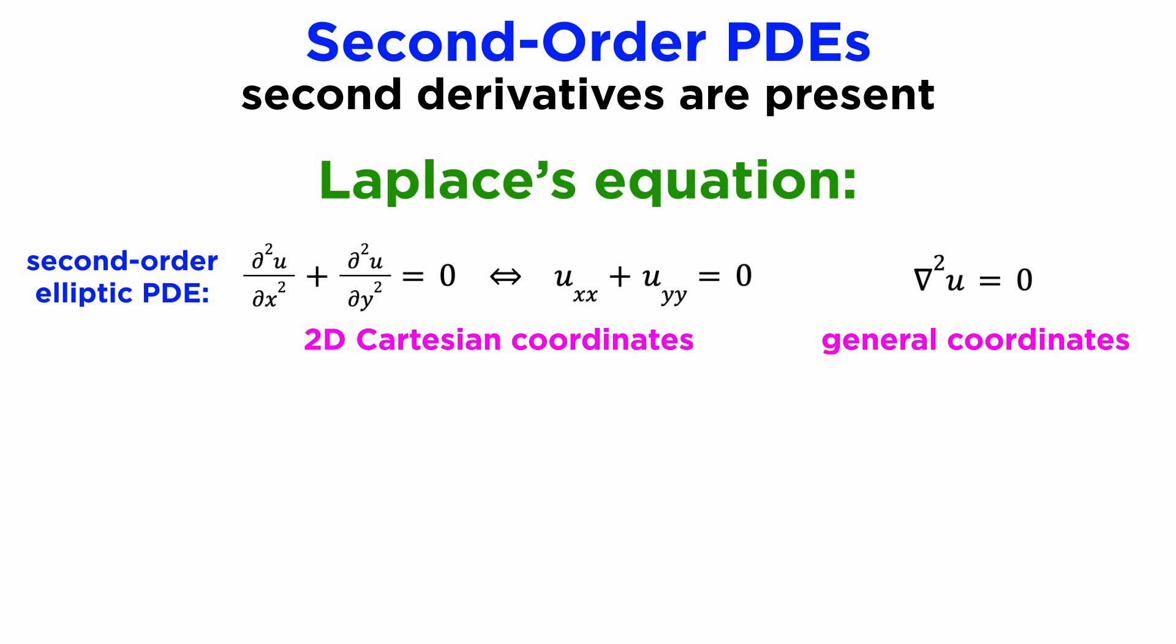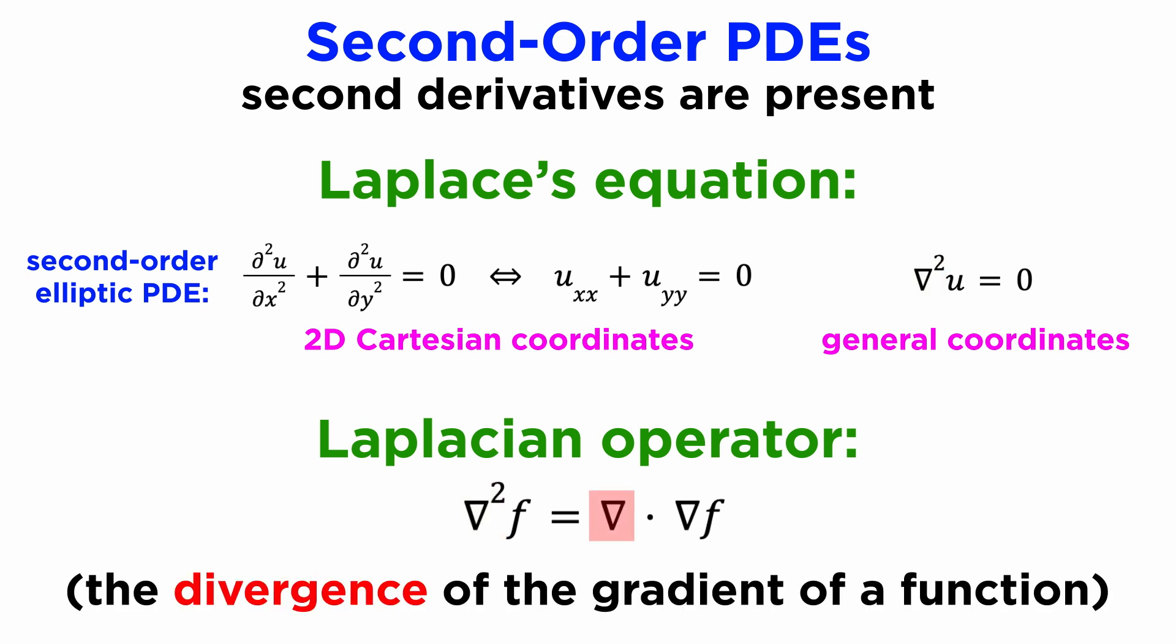In general, these equations are usually written in terms of the Laplacian operator, symbolized with a triangle squared, which is an operator from vector calculus defined as the divergence of the gradient.